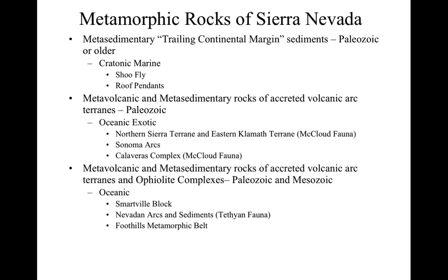The next group is a series of meta-volcanic and meta-sedimentary rocks very similar to the previous one, but these are Paleozoic and Mesozoic. They also have a variety of ophiolite complexes — including the serpentinite representing the mantle, the gabbros, the sheeted dike complexes, and the pillow lavas — all representing a segment of ocean lithosphere.